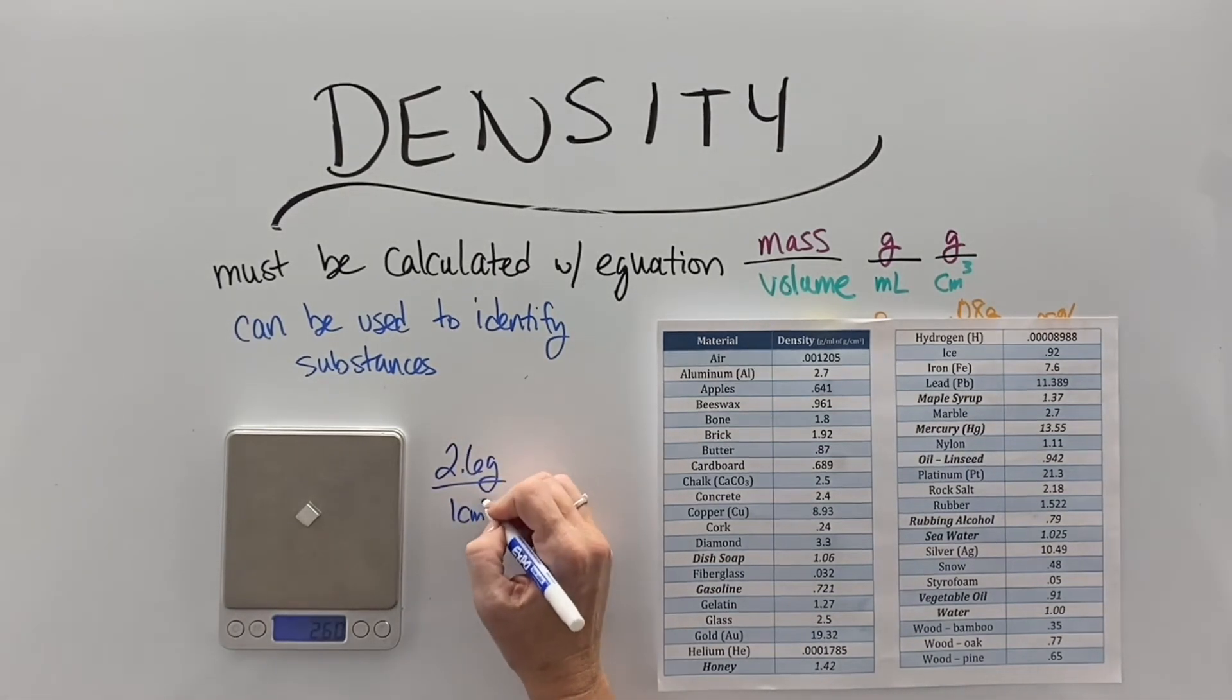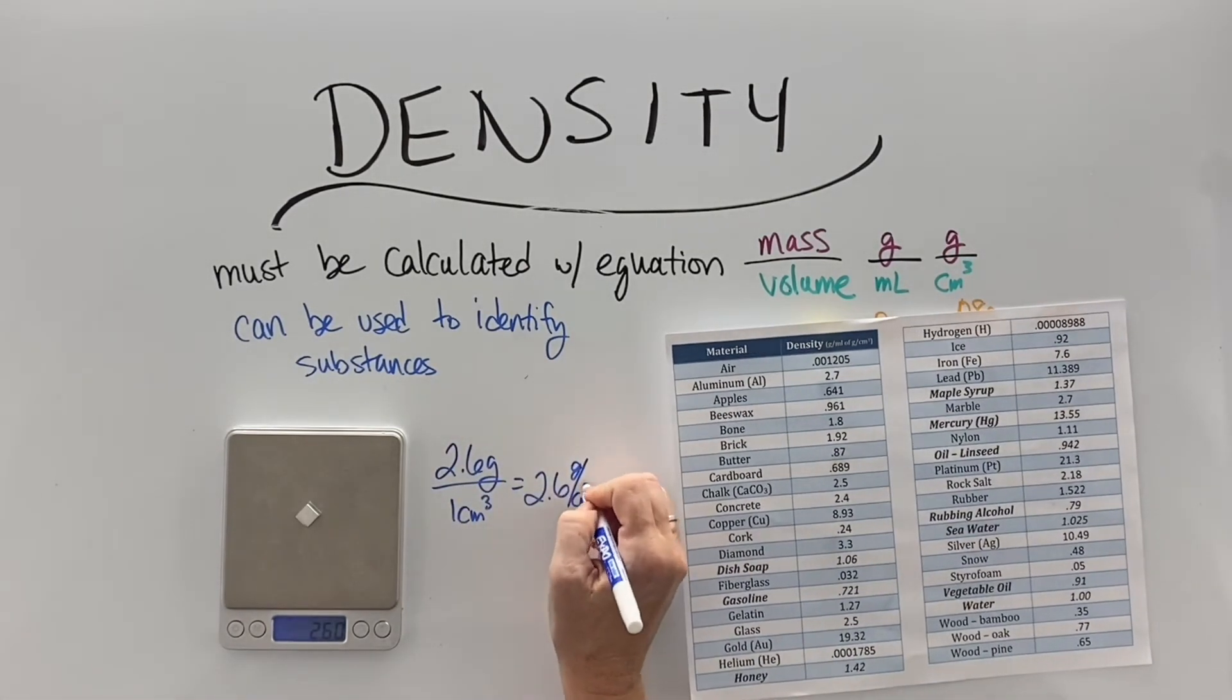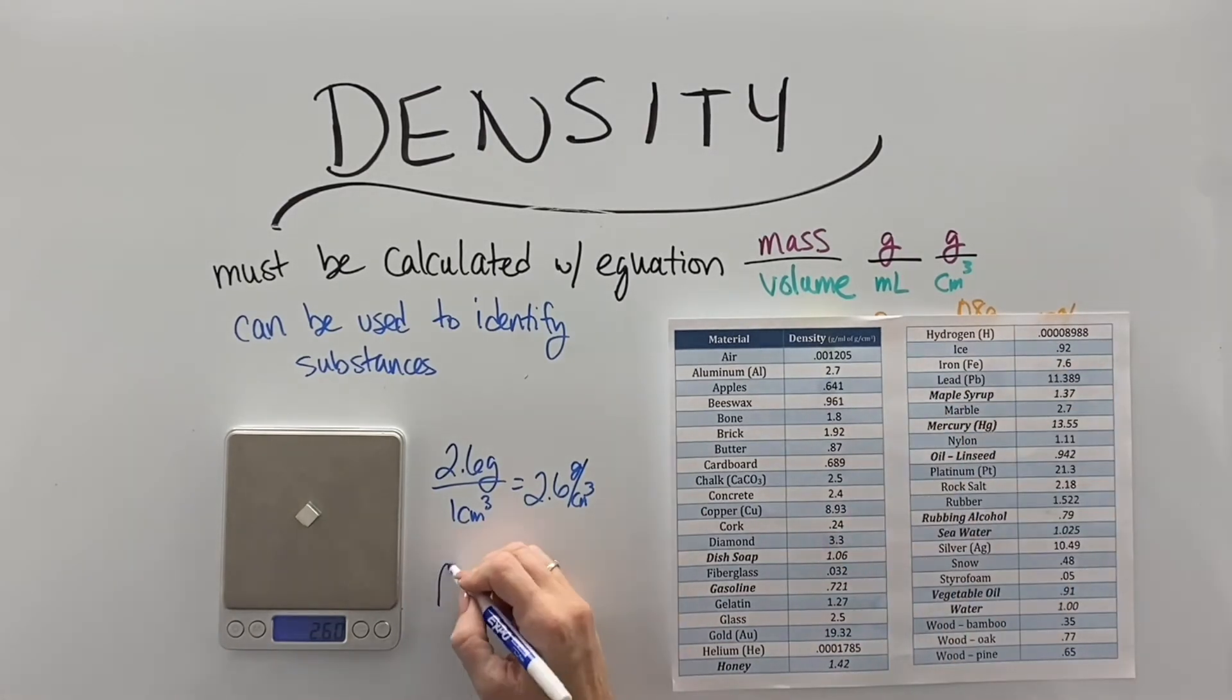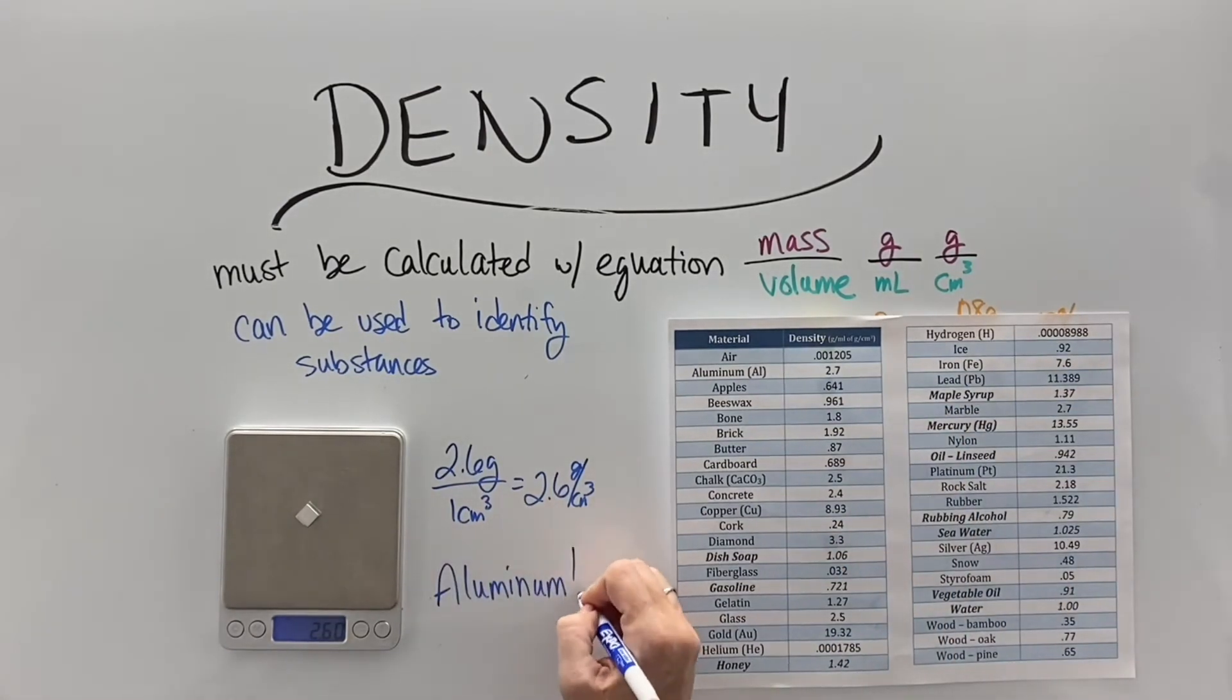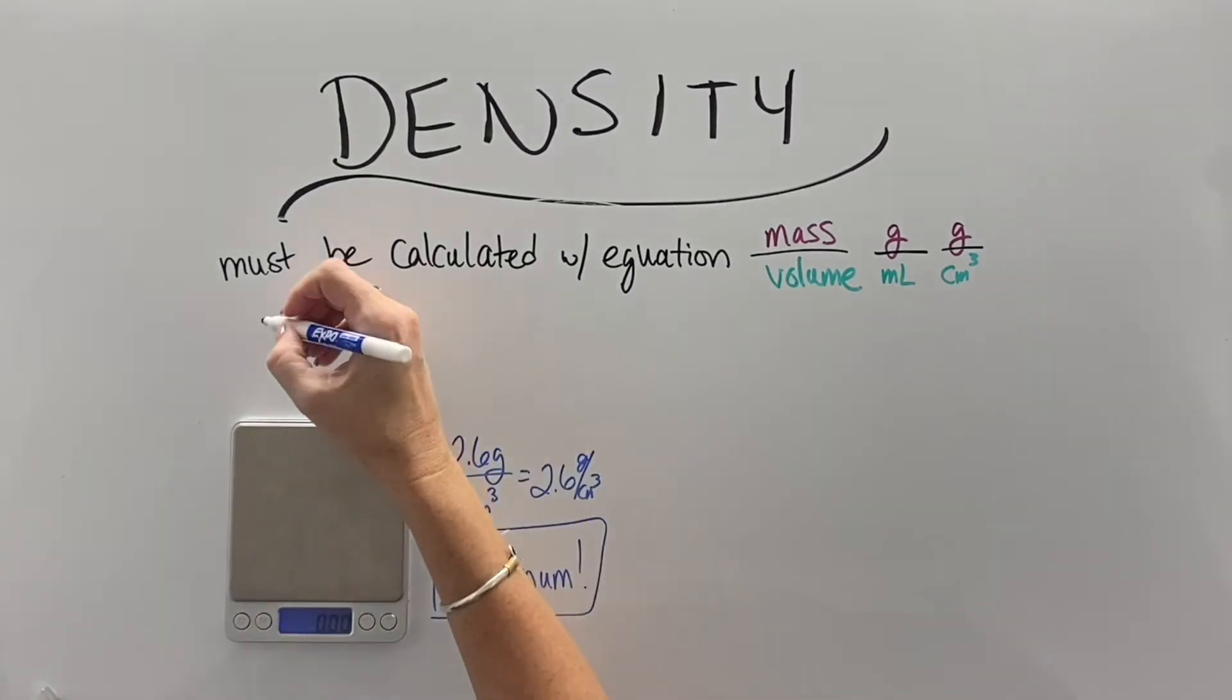And because it's a constant, we can use it to identify substances. So this block here, 2.6 grams in a cubic centimeter is aluminum.